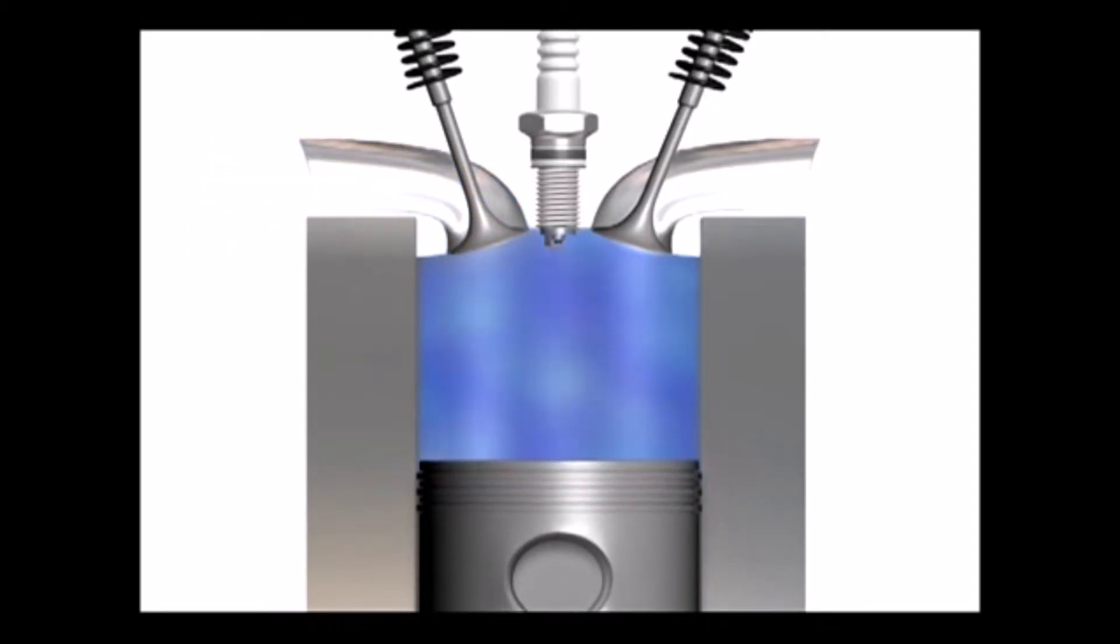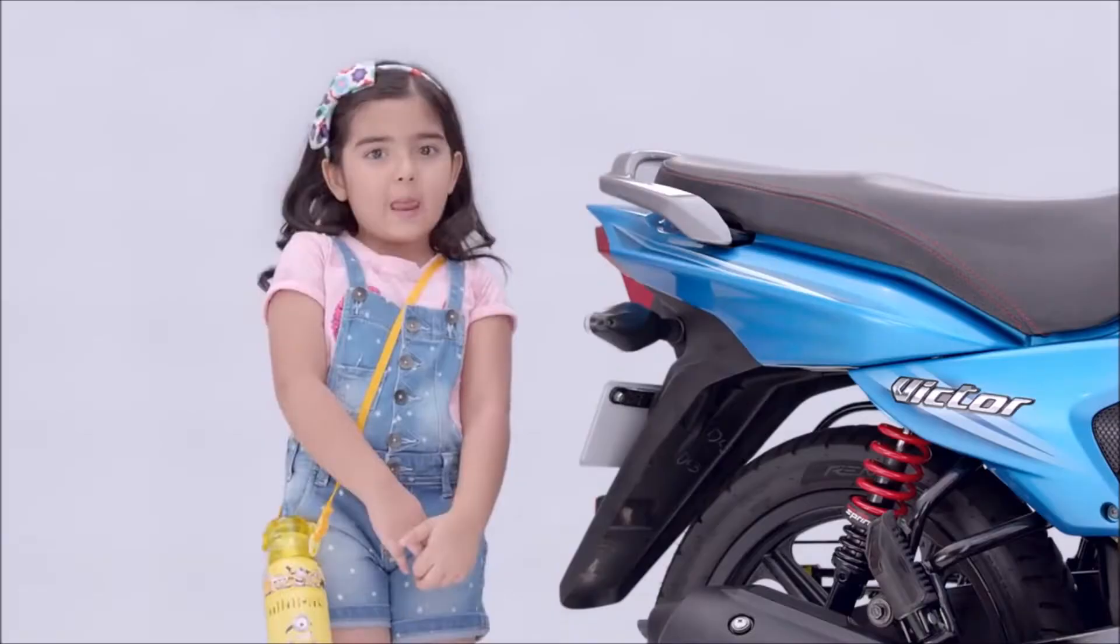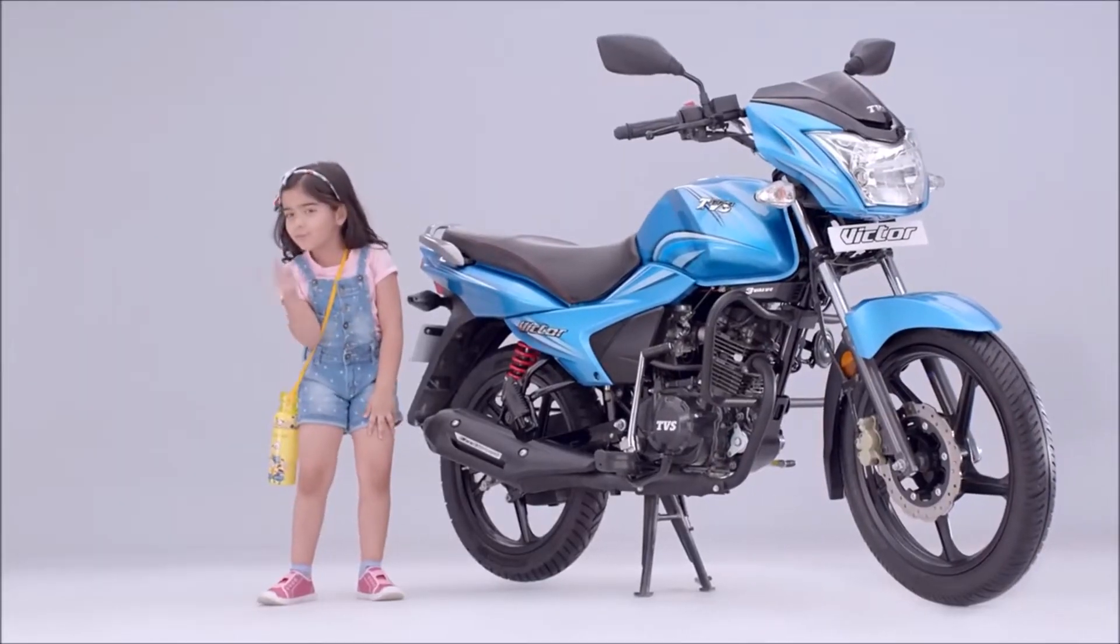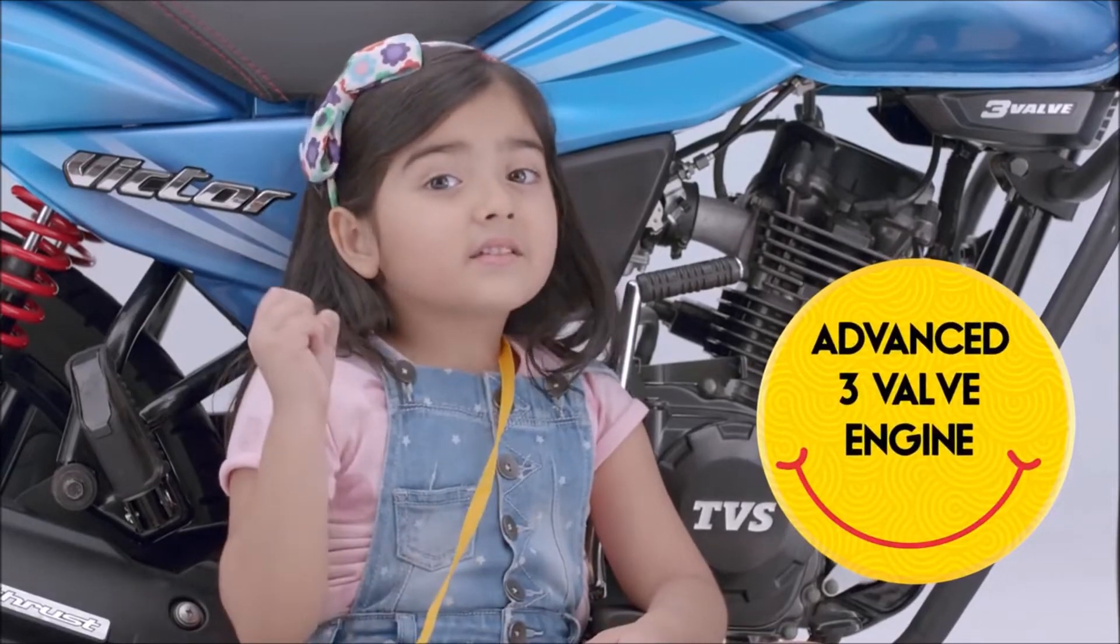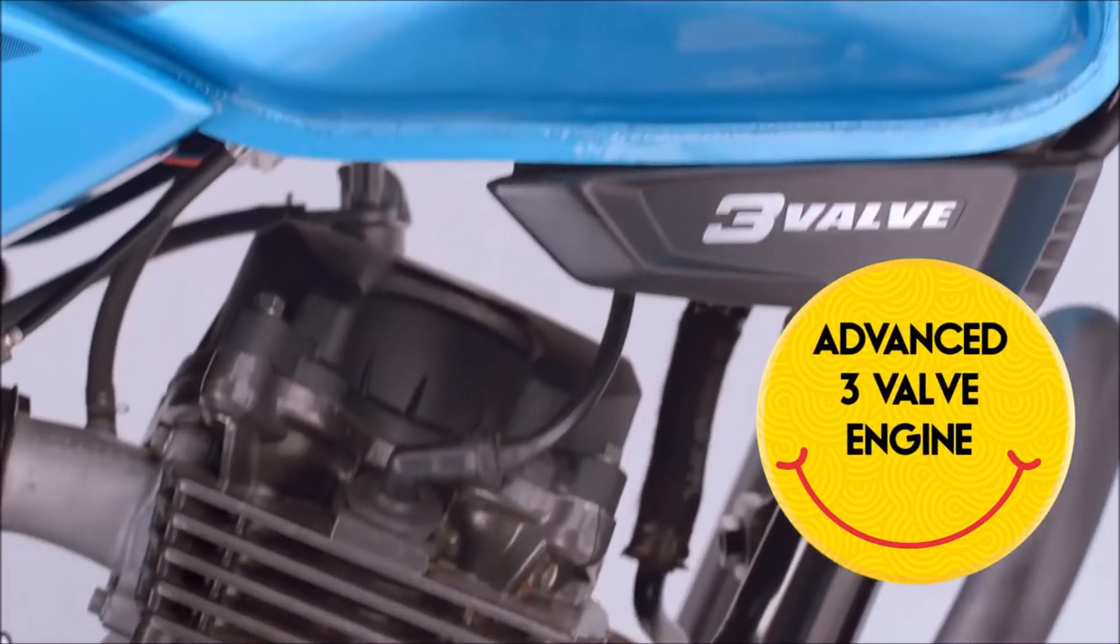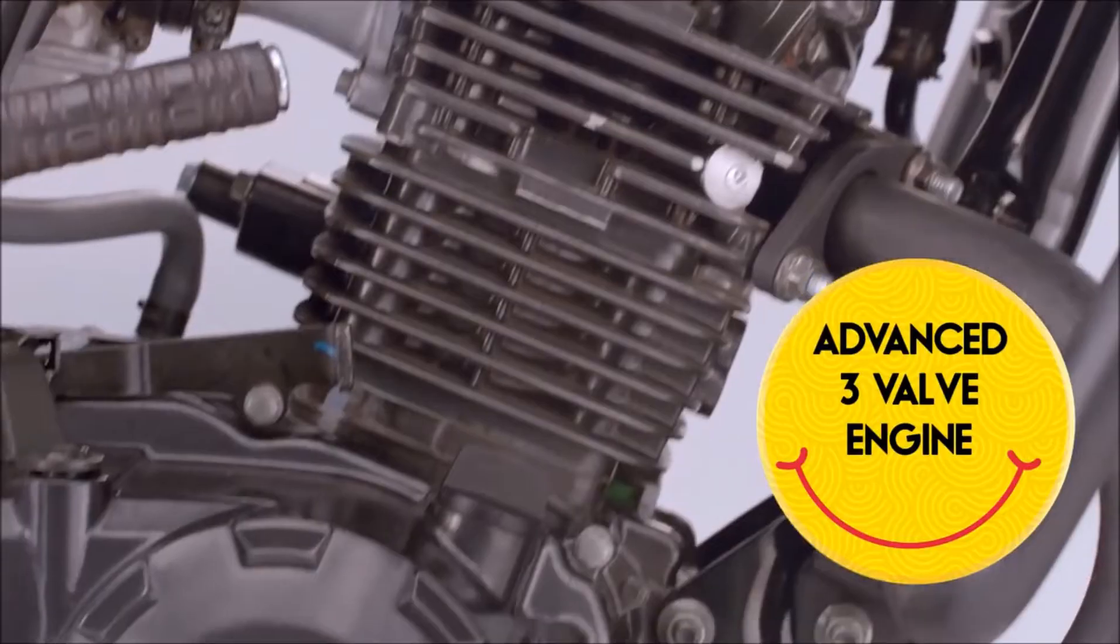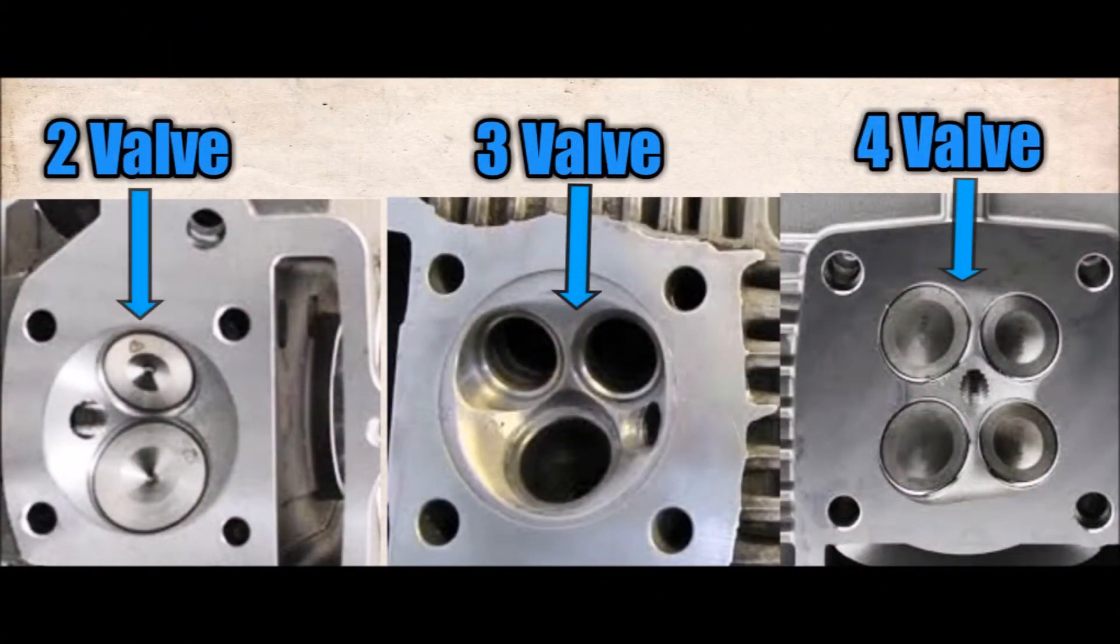Generally, commuter bikes come equipped with basic two-valve mechanism. But in the past few years, two-wheeler makers have evolved and have come up with three-valve and four-valve engines with their bikes, even in the commuter segment. Let's come to the point guys - I have divided these engines into three categories on the basis of number of valves.